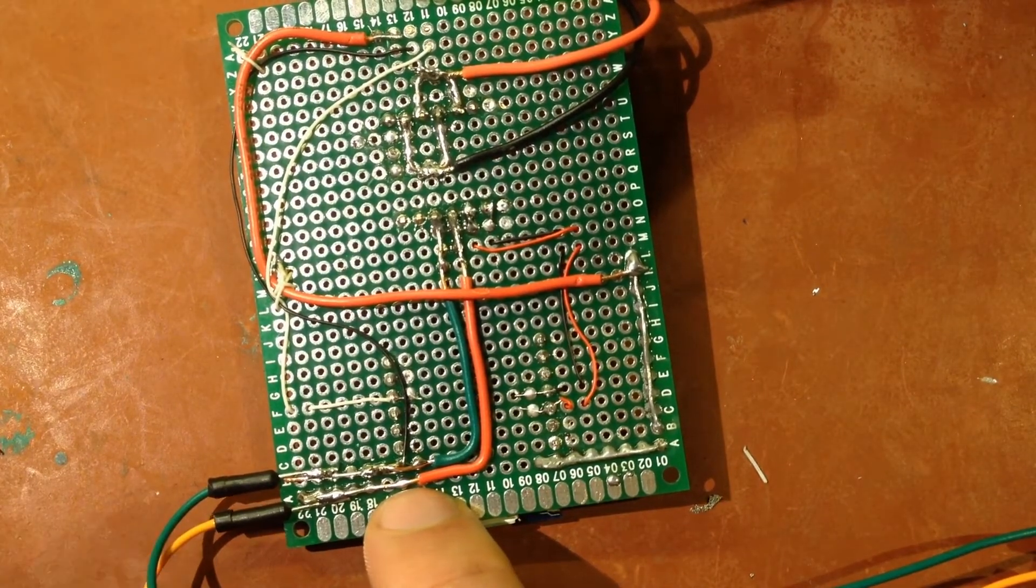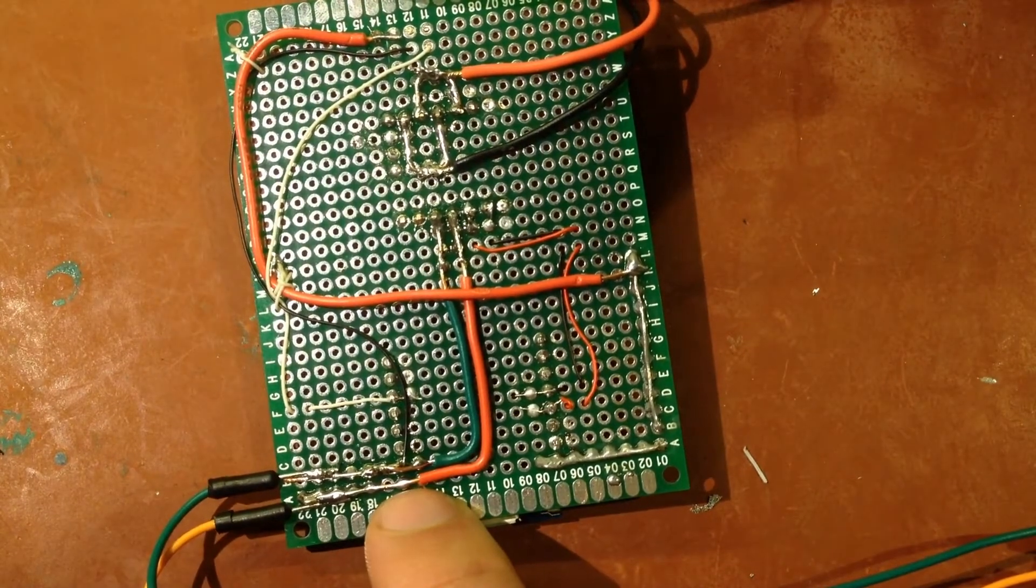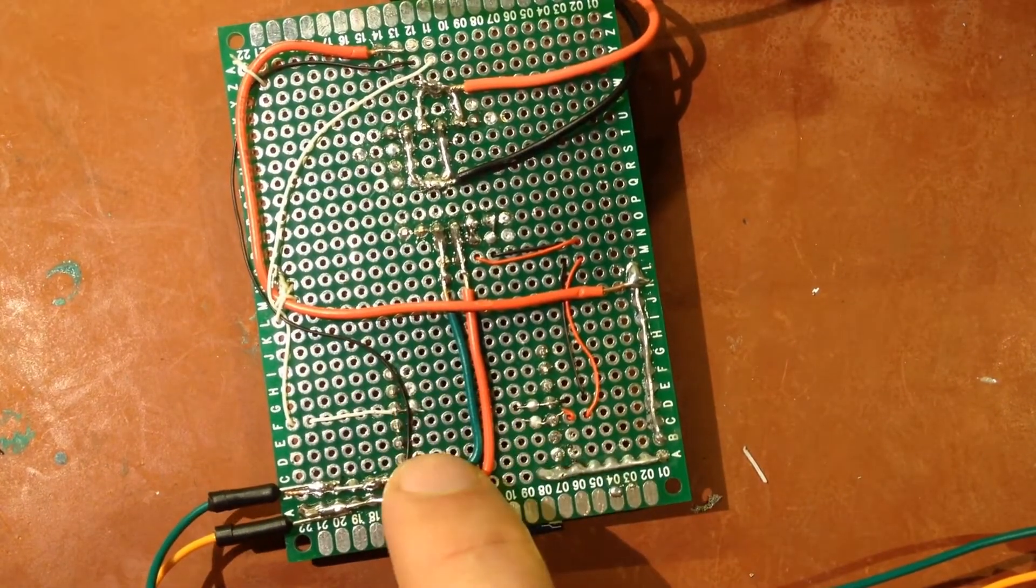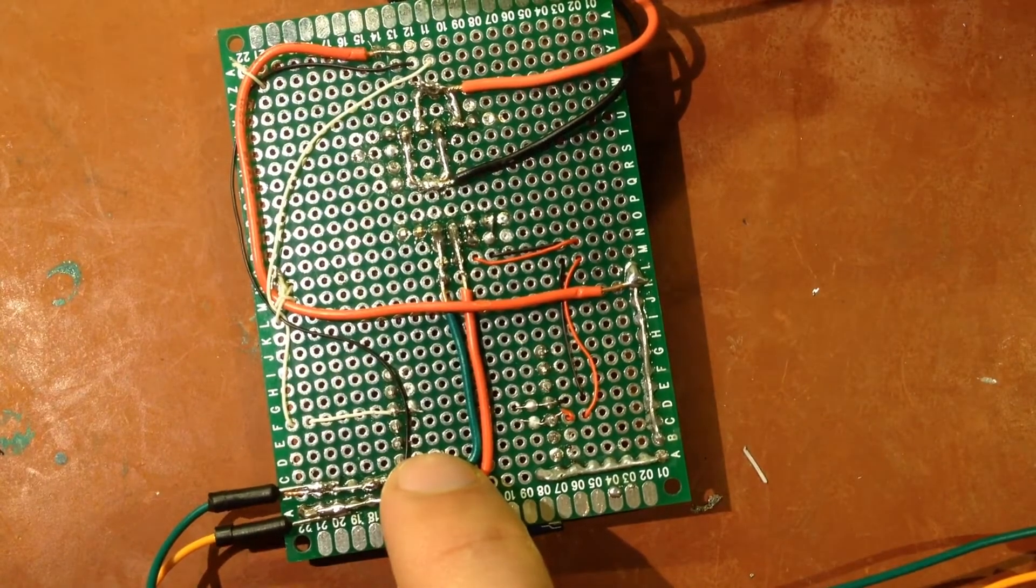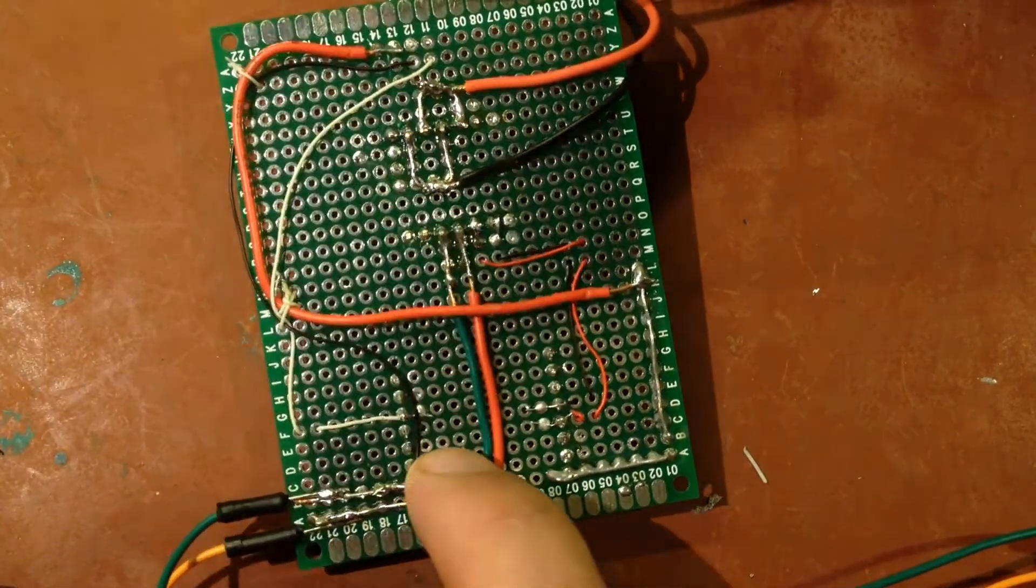And a hall effect sensor to act as a limit switch to tell me once I have reached the top. So with that I should have enough information in order to be able to smoothly go down to the right height and then come back up to the correct height as well.